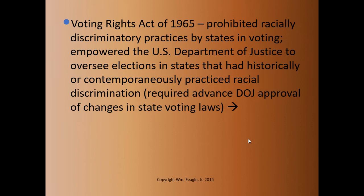The poll taxes, of course, came to an end at the federal level as a result of a constitutional amendment the year before, in 1964. But states like Texas and Virginia, in response to the 24th Amendment, adopted the dual ballot system, and so they were still using the dual ballot system when the Voting Rights Act was put into place. The general point is that Congress passed this legislation saying states can't use any tactics designed to prevent people from voting on the basis of race.